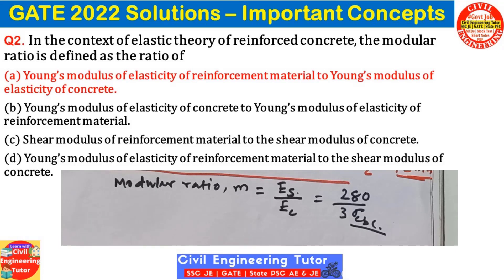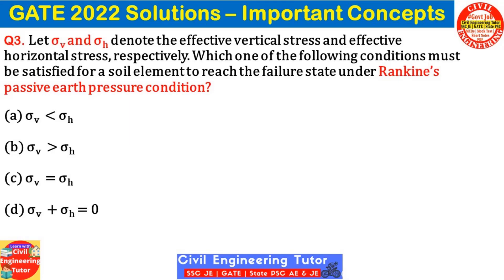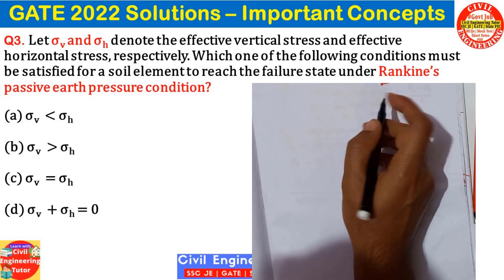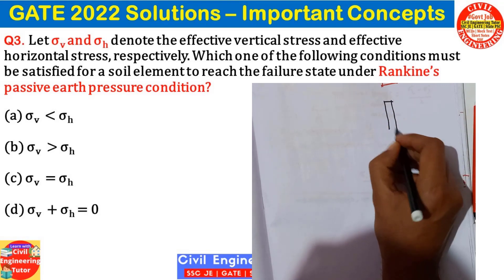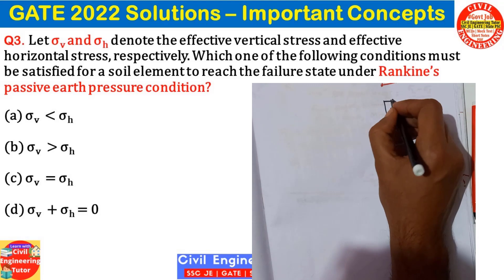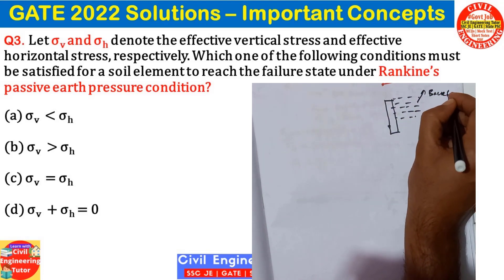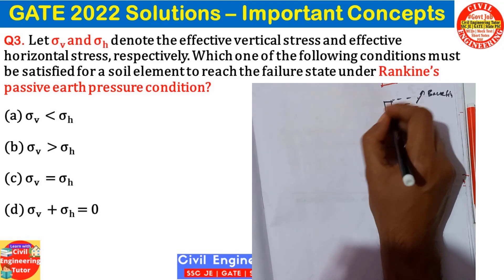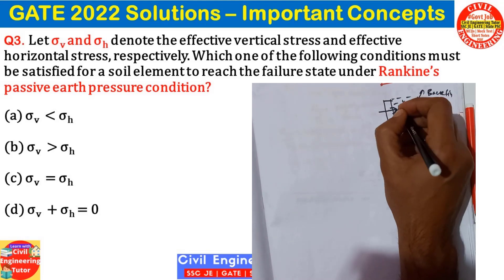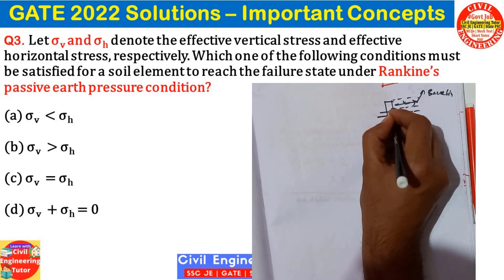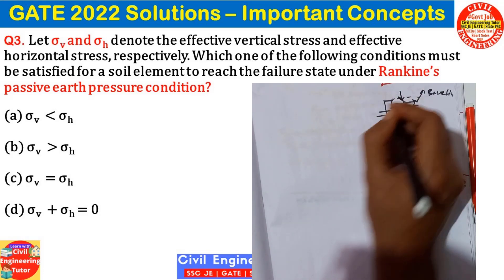These concepts are generally repeatedly asked in junior engineer exams like SSC JE or state PSC JE exams. So let's move to our next question. Question number three: let sigma V and sigma H denote the effective vertical stress and effective horizontal stress respectively. Which condition must be satisfied for a soil element to reach the failure state under Rankine's passive earth pressure condition? In Rankine's passive earth pressure condition, if this is your retaining wall and this is the soil being retained — the backfill — what happens is the retaining wall tries to push the soil mass or backfill inward.